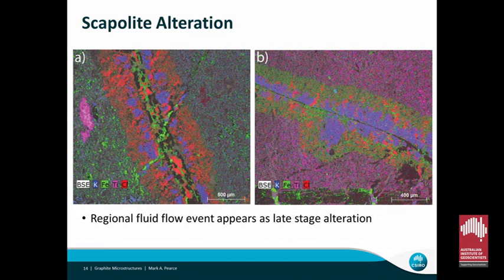These images show the alteration around scapolite-bearing veins. The chlorine indicating scapolite is shown in red, with coarsening of the graphite already distributed through the matrix around the vein. The scapolite alteration veins aren't necessarily always very wide — sometimes just a thin graphite feature within the graphite matrix with alteration around the outside.